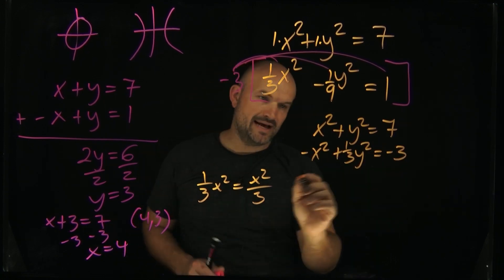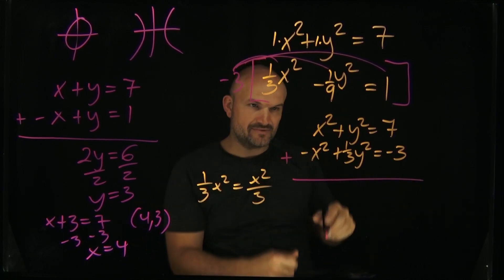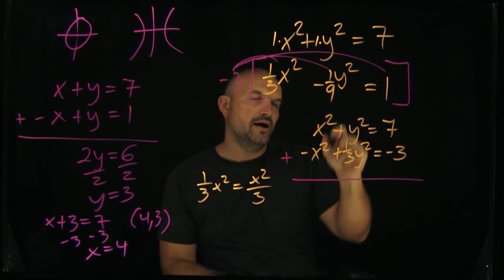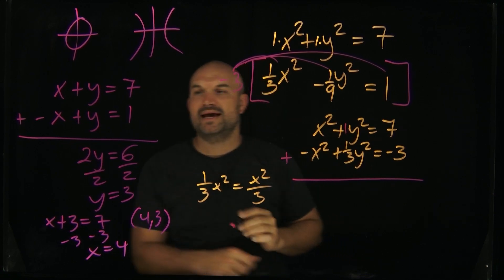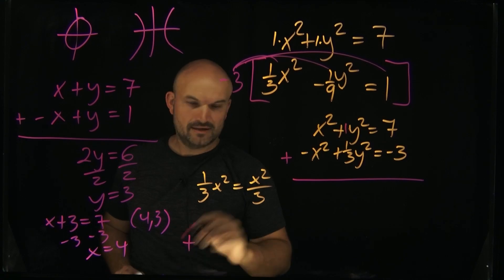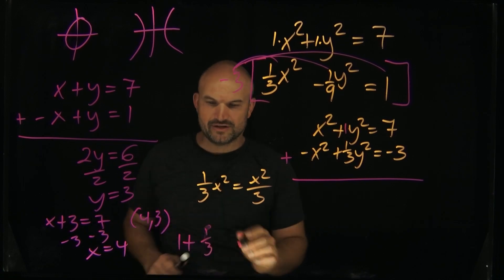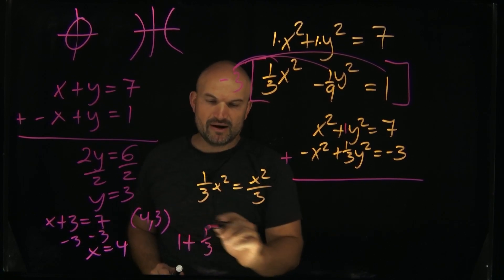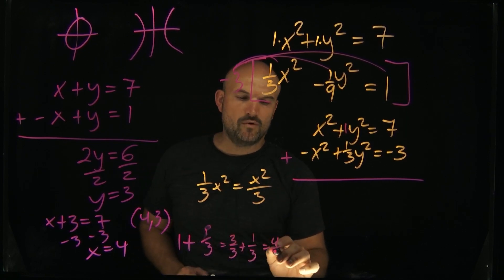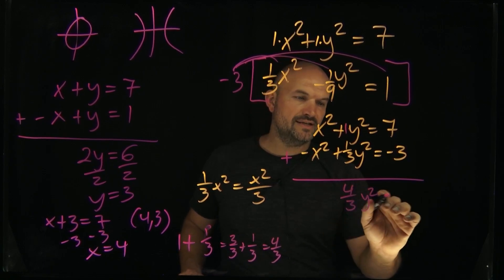Okay, so now when I add these two up, the cool thing is now I'm going to eliminate my x, because that's x squared plus a negative x squared, so it's 0x squared. I don't need to write that. In this case, though, remember that's a 1. So what we have here is, 1 plus 1 third. Well, how do you add a whole number to a fraction? You can rewrite 1 as 3 over 3. 3 over 3 plus 1 third is going to be 4 thirds. So what I have here is 4 thirds y squared equals 4.